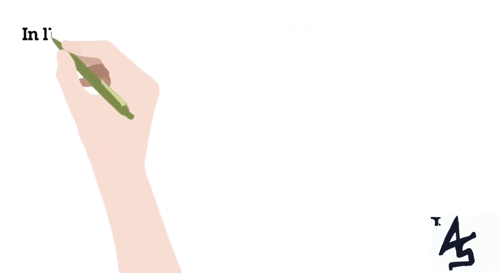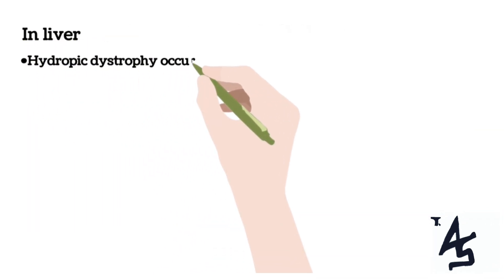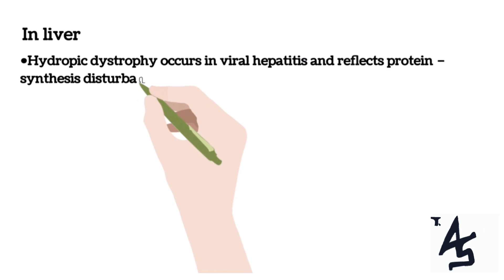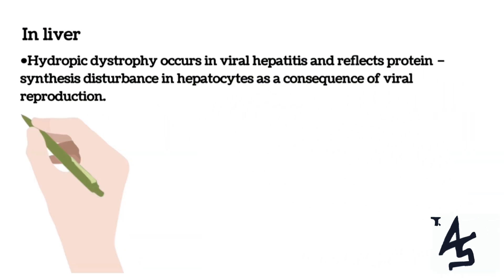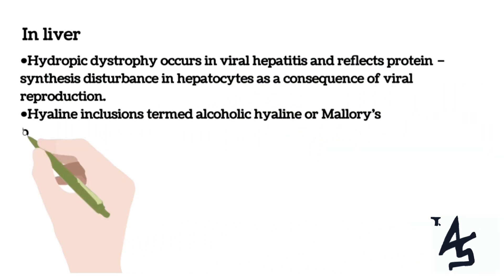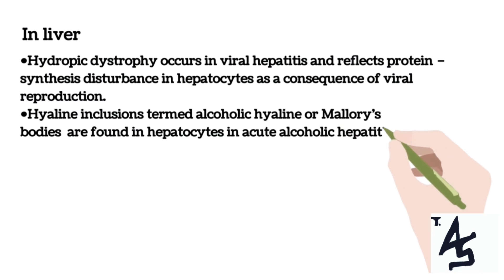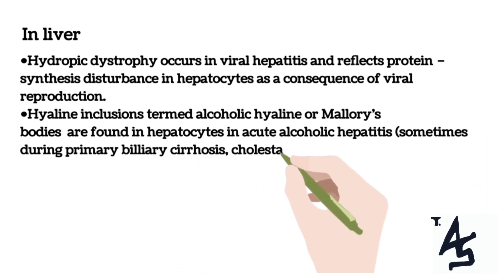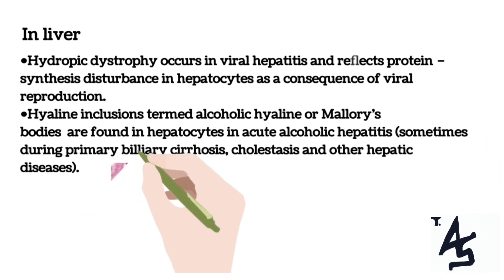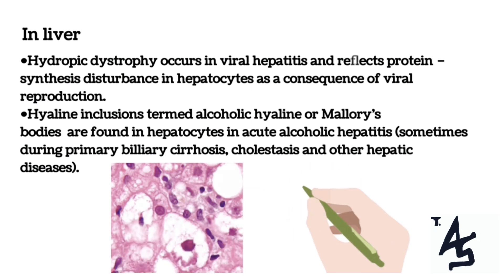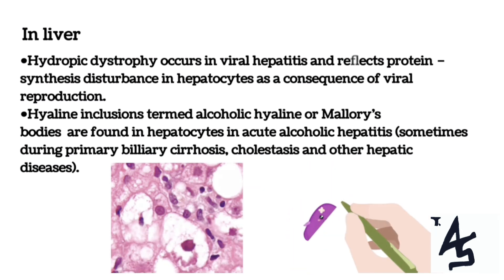In the liver, hydropic dystrophy occurs in viral hepatitis, seen as a result of protein synthesis disturbance in hepatocytes as a consequence of viral reproduction. Interestingly, particular structures known as Mallory's bodies are found in hepatocytes in acute alcoholic hepatitis or even during primary biliary cirrhosis, cholestasis, and other hepatic diseases.